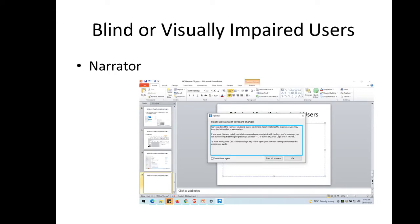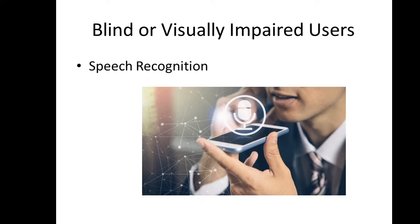We can also use the Narrator. In Microsoft Windows, we have the Narrator — the keyboard layout was updated so it closely matches familiar experiences. In other words, if you cannot see what is on the screen, it can be narrated by the computer. We can also use speech recognition — if you cannot use the input devices, then speech recognition can be used instead.